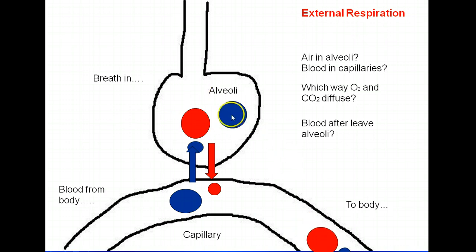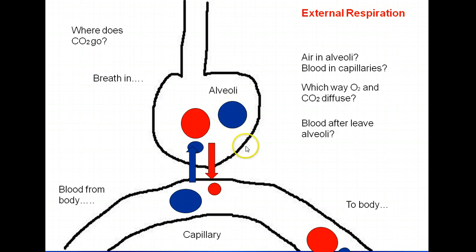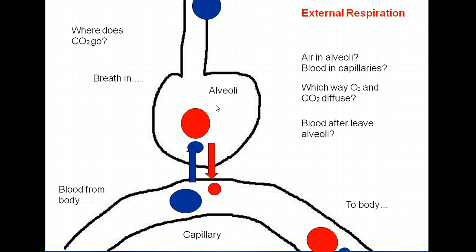One more thing on this slide. We now have CO2 that diffused from the blood into the alveoli. Where is it going to go? When you breathe out, that CO2 will leave the body. That's how we get rid of the waste product carbon dioxide.